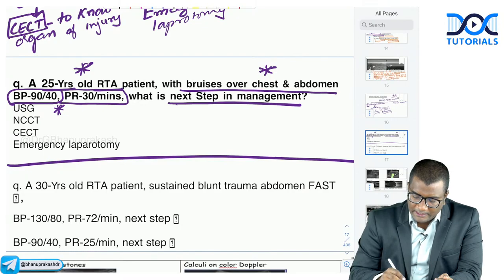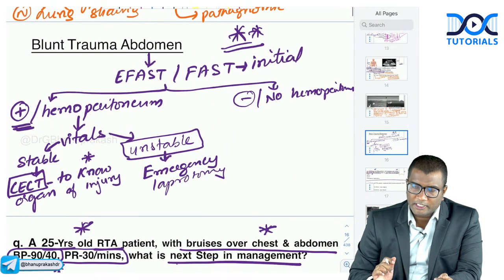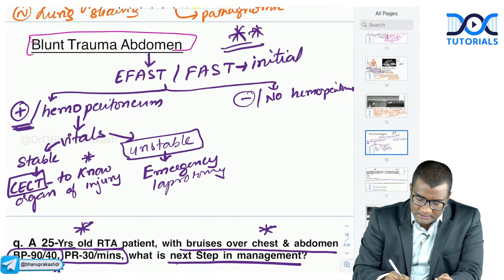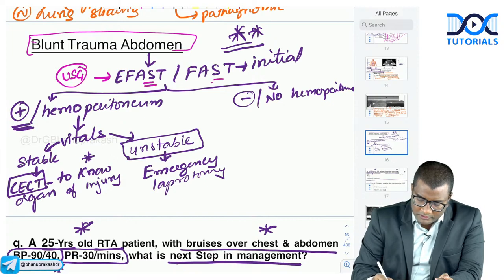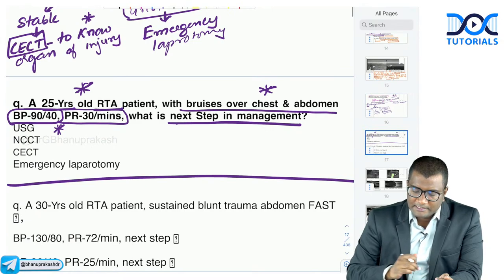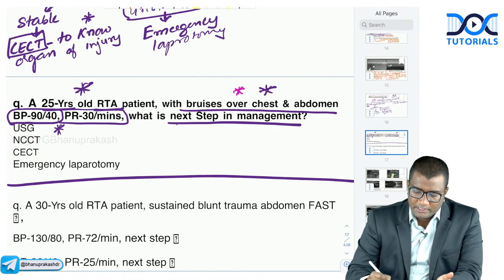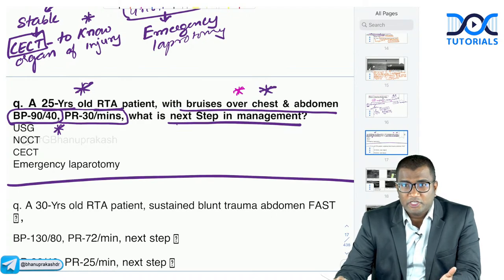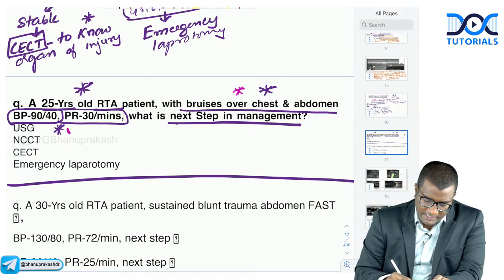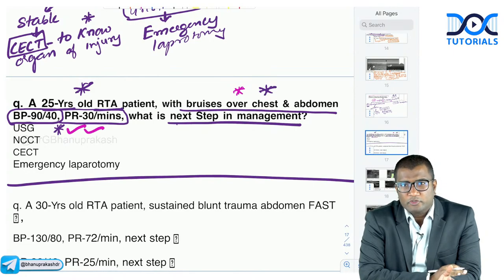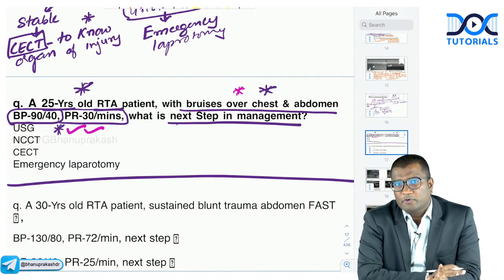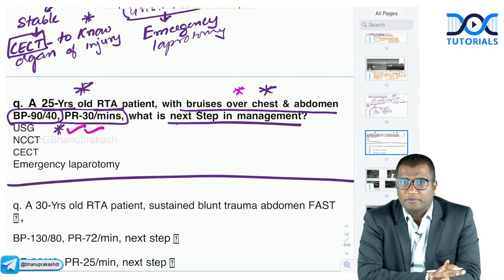Do not jump the protocol. The question does not state FAST is positive. There are bruises over the abdomen AND chest — it could be cardiac tamponade or tension pneumothorax causing circulatory collapse. You cannot go straight to emergency laparotomy. The first investigation must be ultrasound — FAST or E-FAST — which can detect pneumothorax, pericardial collection, and hemoperitoneum. So the answer here is ultrasound.